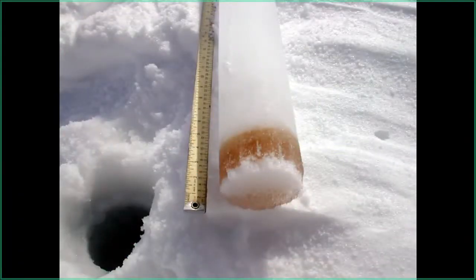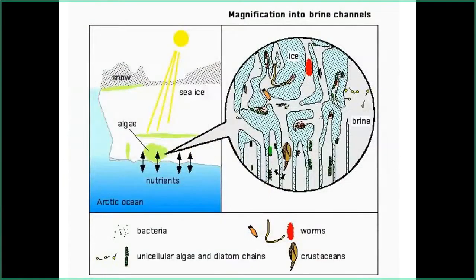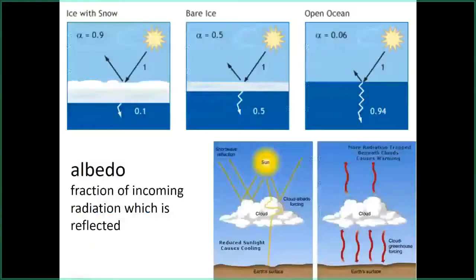Here you can see a lot of algae on the bottom of the sea ice — it's microscopic and small. When the sun comes back in the Arctic, everything is still ice-covered and it produces a lot. Then the ice melts and all these nutrients sink to the bottom of the ocean. That makes not only the water column rich, but especially the ocean bottom very rich in life because all these nutrients sink down.